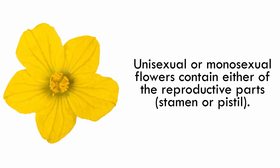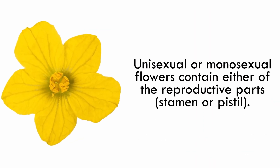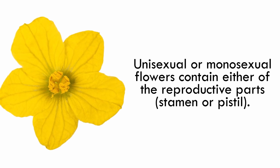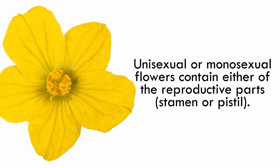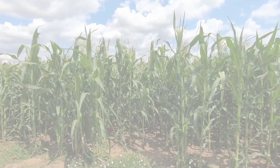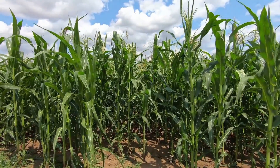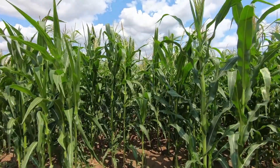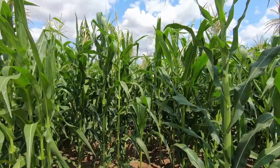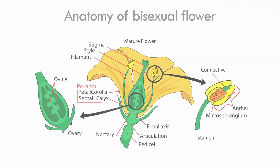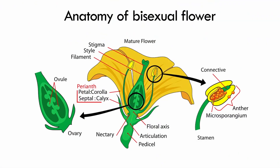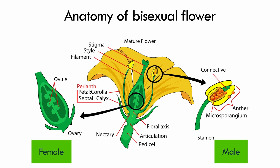Unisexual or monosexual flowers contain either of the reproductive parts, stamen or pistil. The same plant can have both male and female unisexual flowers. Bisexual or complete flowers contain both the male and the female gametes.